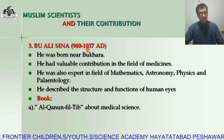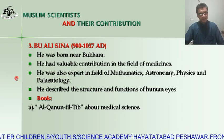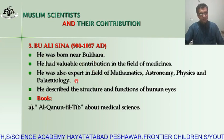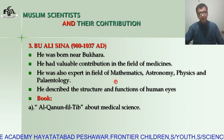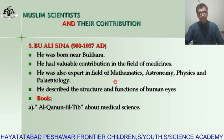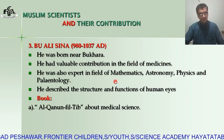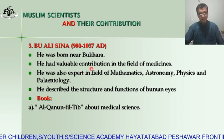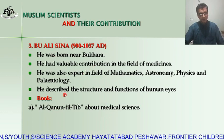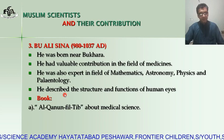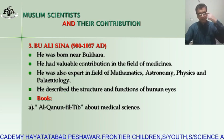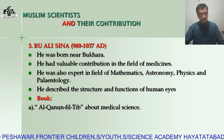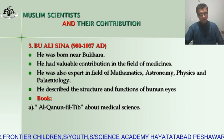Bu Ali Sina, 980 to 1037 AD, was born near Bukhara. He had a valuable contribution in the field of medicine, but he was also an expert in mathematics, physics, and paleontology. He described the structure and function of the human eye. His famous book is Al-Qanun fi al-Tibb, which was about medicine.